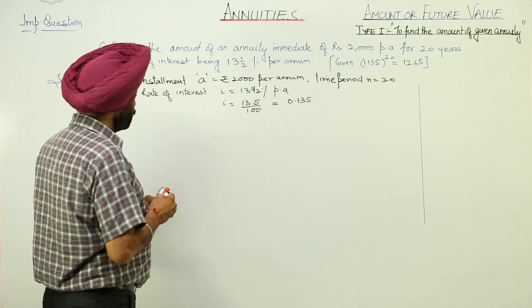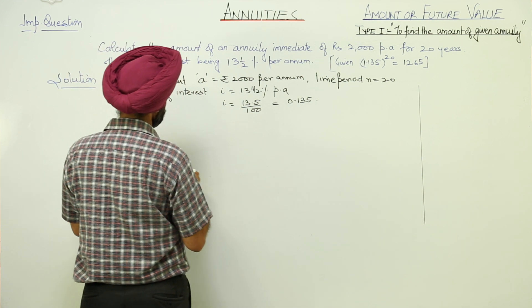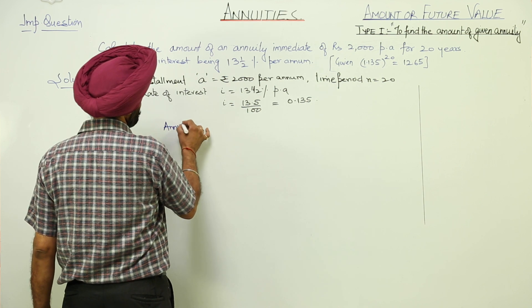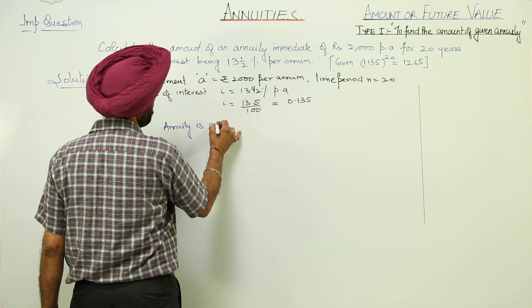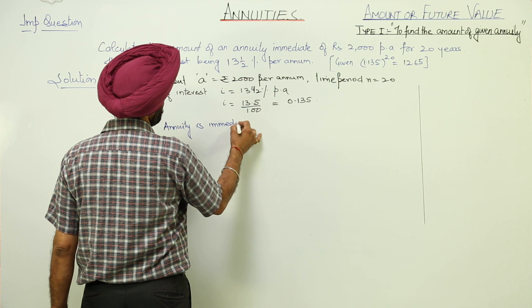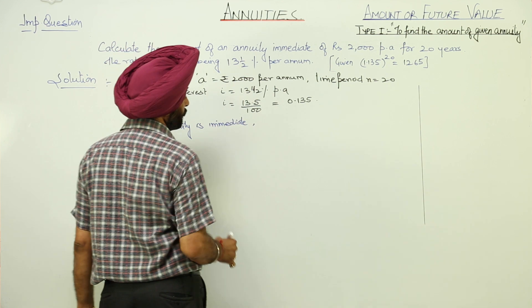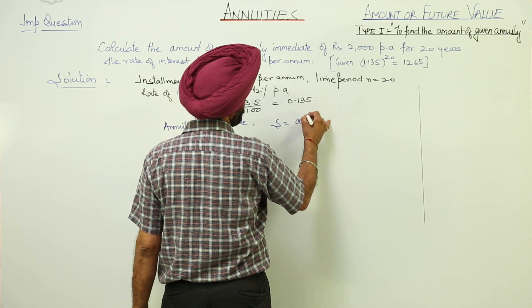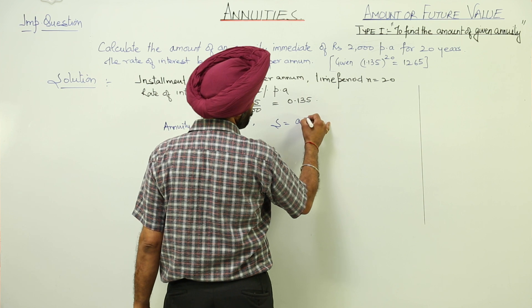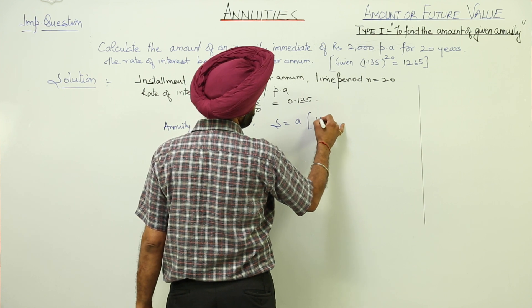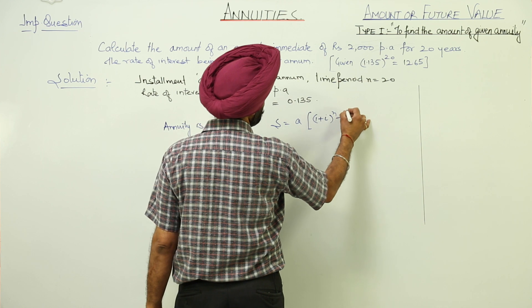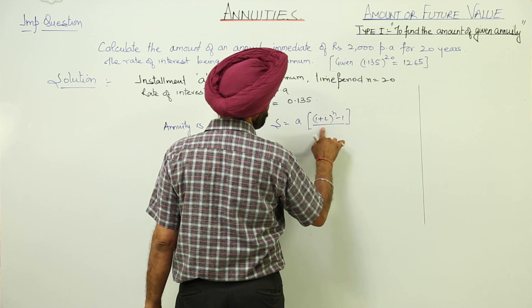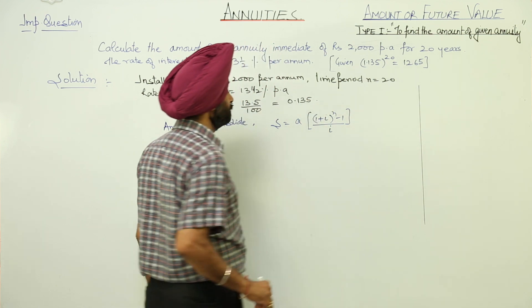Now, annuity is immediate. So, the formula is A times the quantity 1 plus i raise to power n minus 1, all upon i.